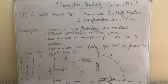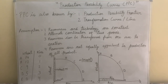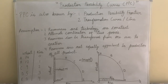PPC has other names: Production Possibility Frontier and Transformation Curve or Line. Production Possibility Frontier refers to the two production possibilities — wheat and rice in our example. Transformation Curve means we are transforming resources from the side of wheat to the side of rice — sacrificing wheat for the production of rice.